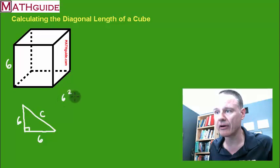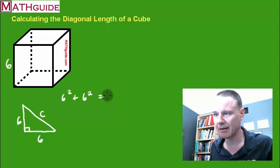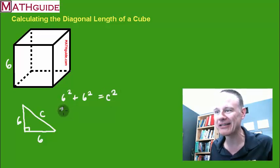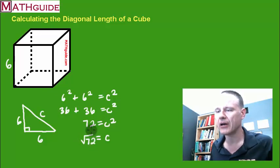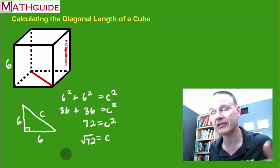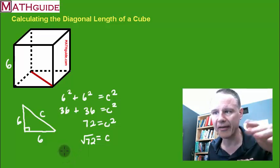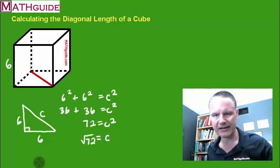Six squared plus six squared equals C squared. Six squared is 36, six squared is 36 — add them together and you get 72. Take the square root of both sides and you get the square root of 72. So the length of the diagonal of just the bottom face — which is the same for all faces — equals the square root of 72.